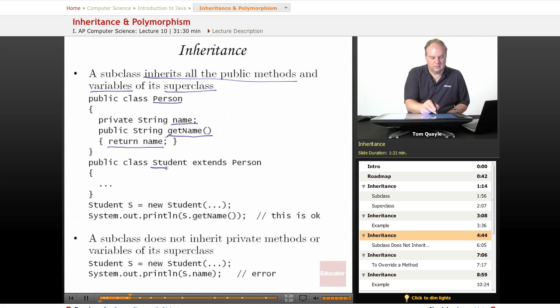Then I have student that extends person, so student is a subclass of the superclass person. I declare a student, S, call the constructor, and then I use the getName method, which is defined in the superclass person. I can call that on an object, S, of the type student, which is the subclass. So even though I did not define a getName method on student, it inherited the getName method from the superclass and this is perfectly okay.